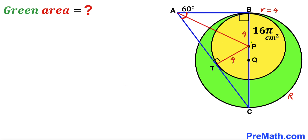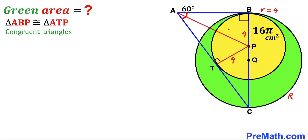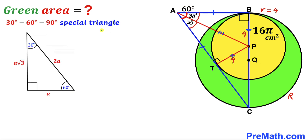Now I've connected center P with external point A, giving us two right triangles: ABP and ATP. These two triangles are congruent by the Side-Side-Side congruency theorem — one pair of sides is equal, one side is common, and the two tangents from an external point are equal. Since the triangles are congruent, the angle BAC of 60 degrees is split into two 30-degree angles, making these special 30-60-90 triangles.